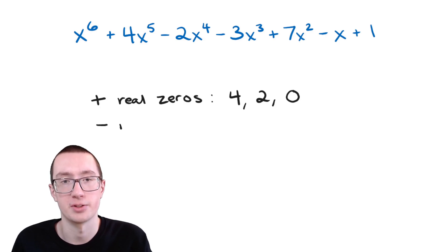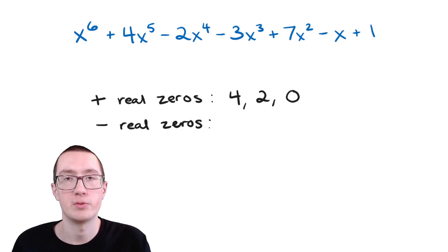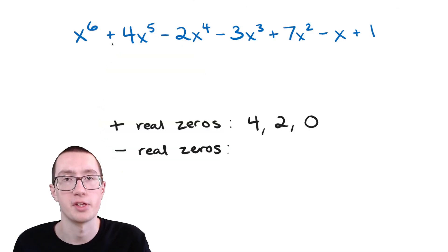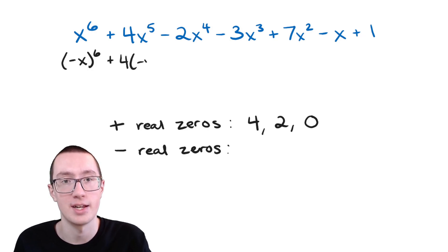Now that's just for positive real zeros. How about negative real zeros? That's just a fancy way of saying negative answers, like negative two or negative 400. To figure out negative real zeros, we need to figure out how many times the sign changes, just like before, but with negative x in place of x. I'm going to show you the technical way to do this and then a shortcut. So we need to replace x with negative x.